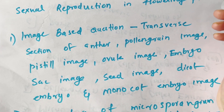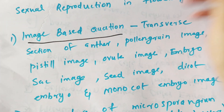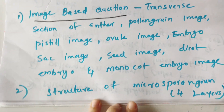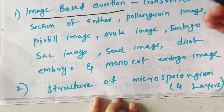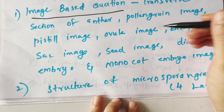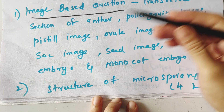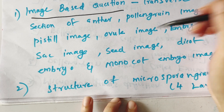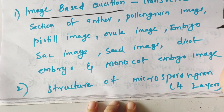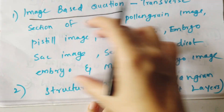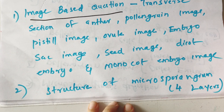if you are interested in Sexual Reproduction in Flowering Plants, first of all, you will encounter image-based questions: transverse section of anther, pollen grain image, pistil image, ovule image, embryo sac image, seed image, dicot embryo and monocot embryo image. These are the image-based questions.